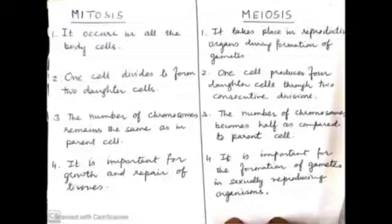The number of chromosomes remains same as in the parent cell in mitosis, but in meiosis, the number of chromosomes become half. Then mitosis is important for growth and repair of tissues and meiosis is important for the formation of gametes in sexually reproducing organisms. Thank you, children.